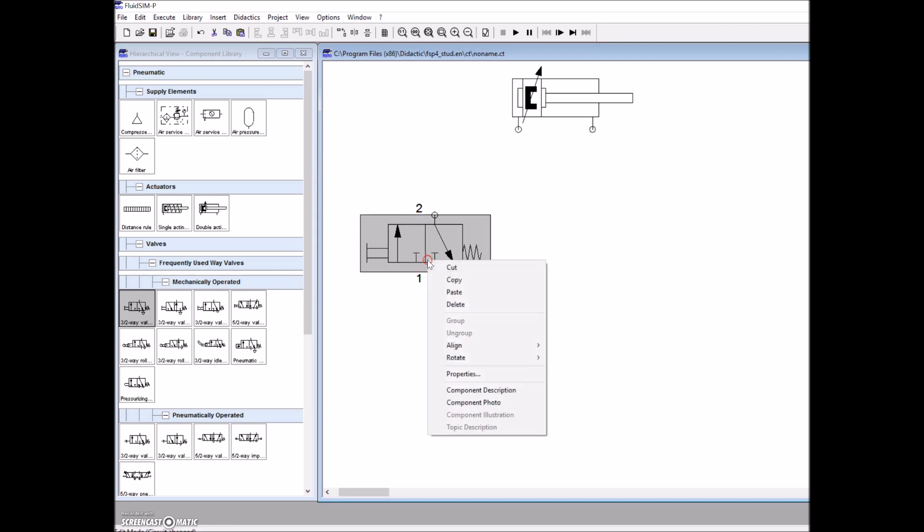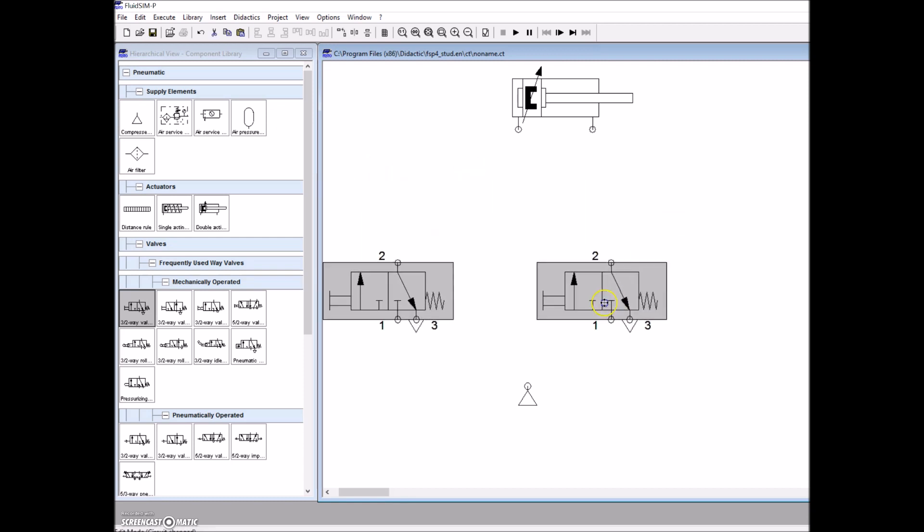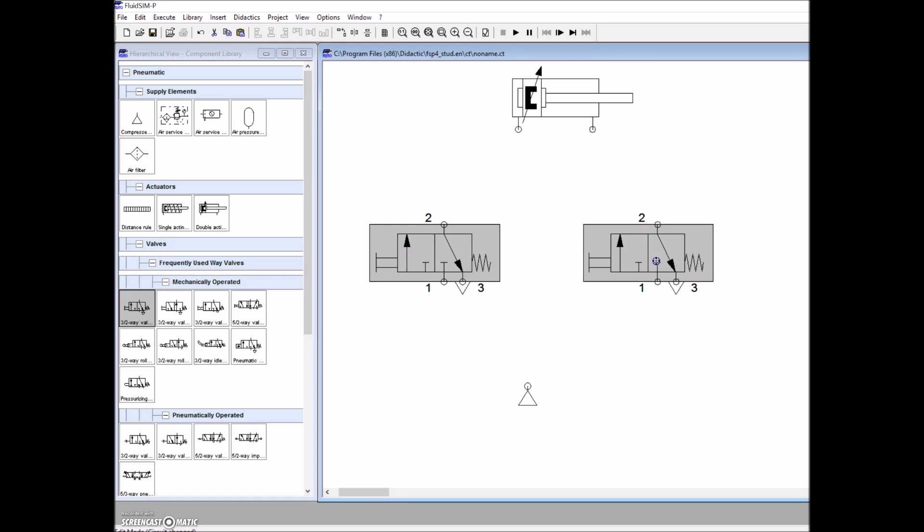We need two 3-2 normally closed push buttons. So we'll drop this guy in. If we need to copy this guy, we can copy and paste him. If you need to copy larger portions, you can grab both of them and copy and move them around. You can also reconfigure these guys in that you can move both switches around if you need to make a little bit more room. Now we've got everything in place, and we just need to connect everything up.